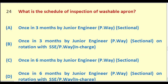What is the schedule of inspection of washable apron? Options: once in three months by JE PW Sectional; once in three months by JE PW Sectional on rotation with SSE PW in charge; once in six months by JE PW Sectional; once in six months by JE PW Sectional on rotation with SSE PW in charge. The right answer is: once in three months by Junior Engineer Permanent Way Sectional on rotation with SSE Permanent Way in charge.